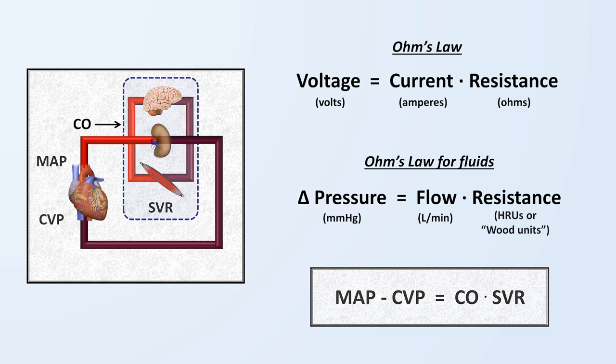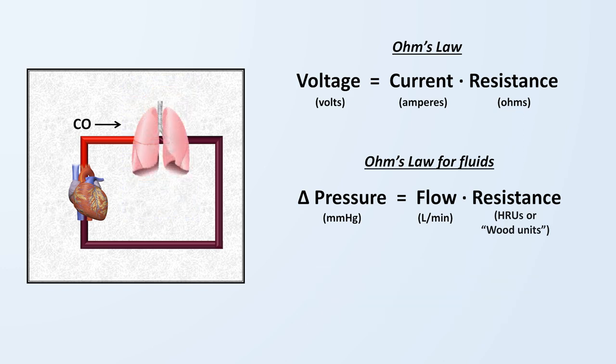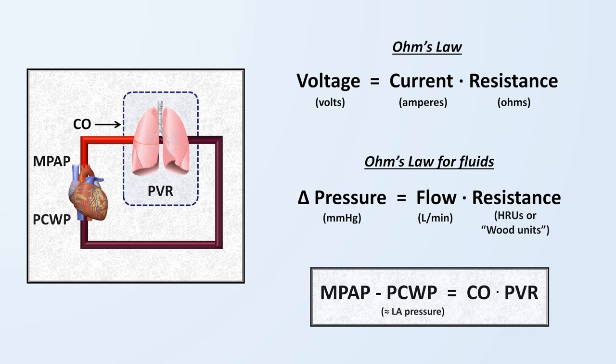There exists an equivalent equation for the pulmonary circulation in which the mean pulmonary artery pressure minus the pulmonary capillary wedge pressure equals the cardiac output times the pulmonary vascular resistance.